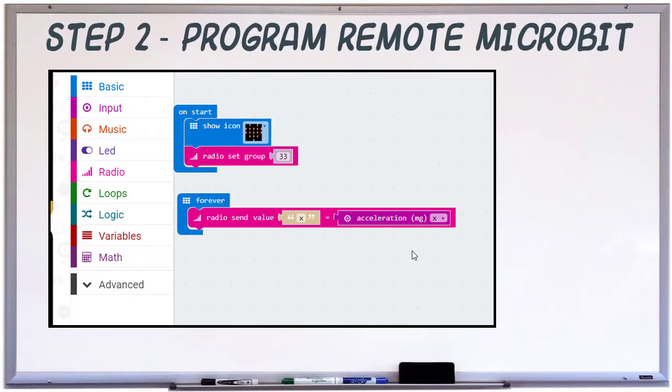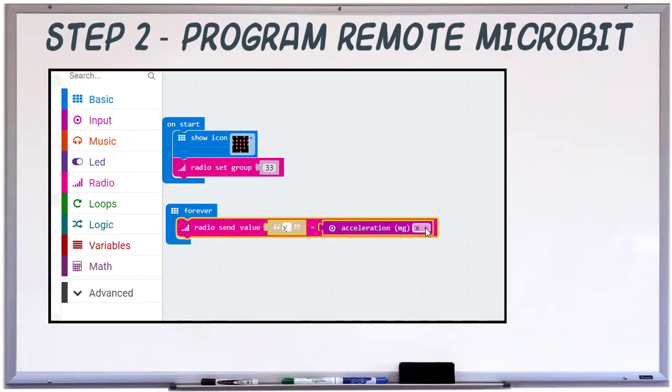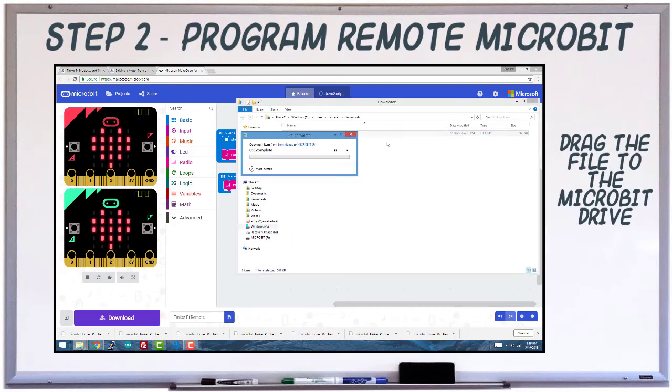We're going to be tracking the y-axis of the accelerometer, so change the variable to y and the acceleration to y. Download the file and save it to the remote microbit.